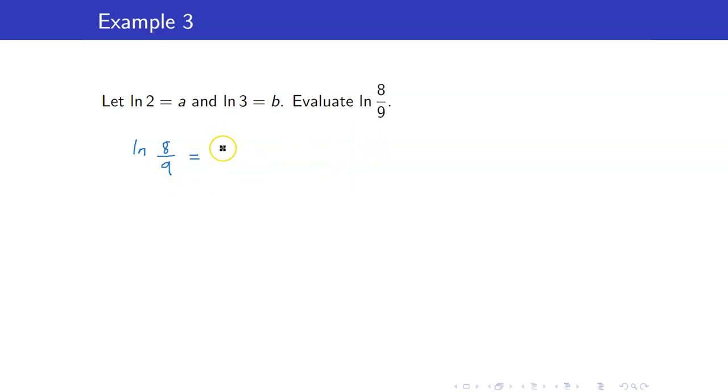First, we write 8 as 2^3 and 9 as 3^2, so that we will have our ln(2) and ln(3). Next, we split this up so that we will get ln(2) and ln(3) alone. This is ln(2^3) - ln(3^2). Let's get rid of the exponents by bringing them down. So that's 3ln(2) - 2ln(3). And we are now ready to substitute the values. ln(2) is a, ln(3) is b. So this is 3a - 2b.